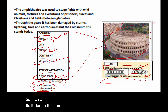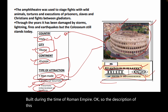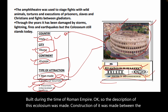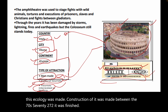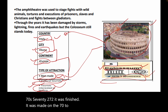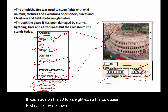The Colosseum was built during the time of the Roman Empire. Its construction took place between 70 and 80 AD. The Colosseum's original name was the Flavian Amphitheatre.